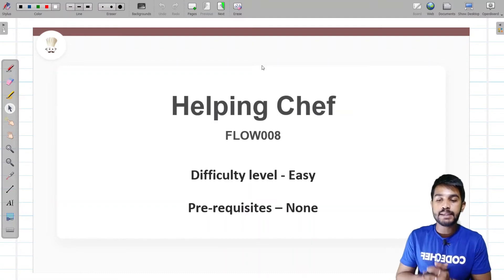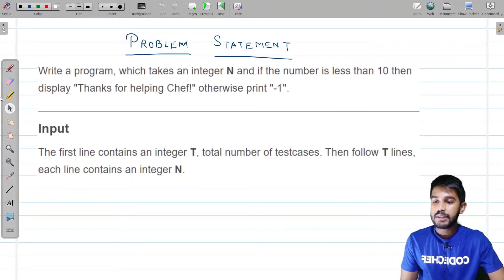Today we will be discussing the problem named HelpingShift which has a problem code of FLOW008. It has a difficulty level of easy and the prerequisite to solving this problem is none. Let's understand the problem statement.